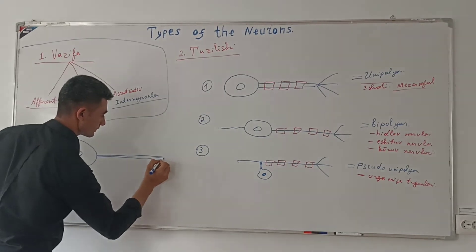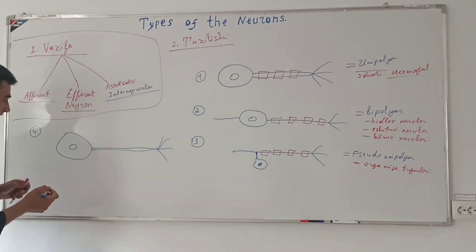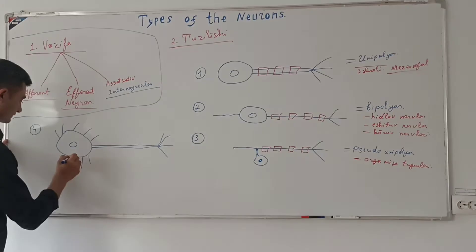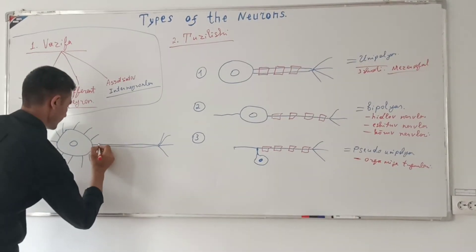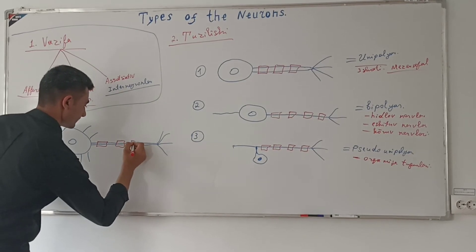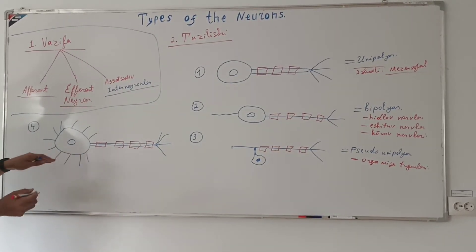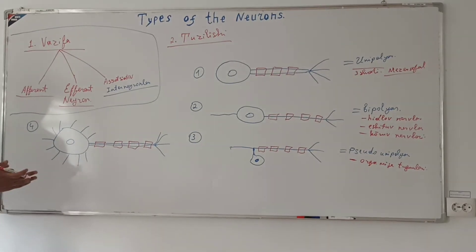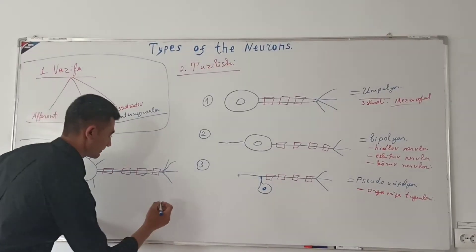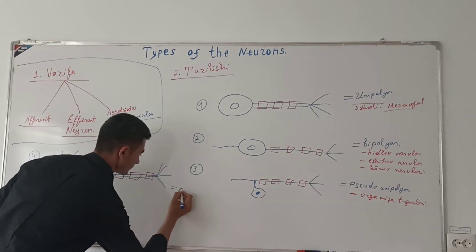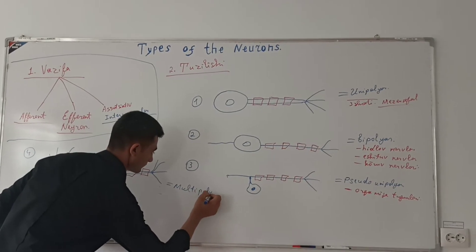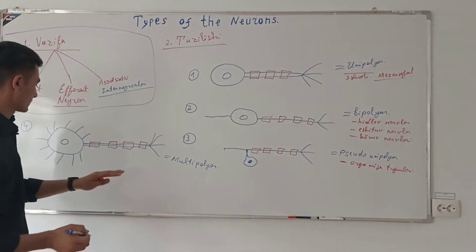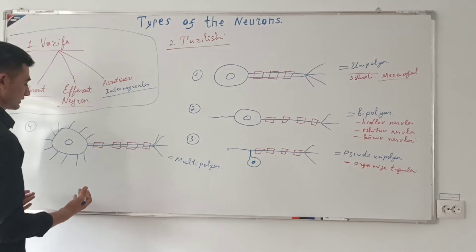Ko'p sonli dendritlar hamda bitta aksonga ega bo'lgan neyronlar multipolar neyronlar deb ataladi. Bu multipolar neyron bo'lib, u o'z tuzilishi bilan boshqalardan farq qiladi.